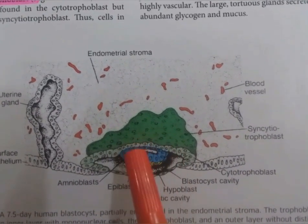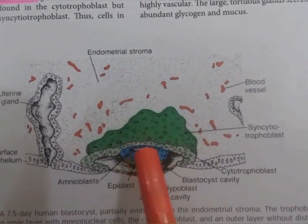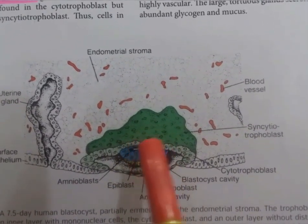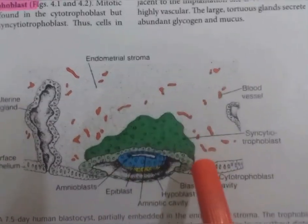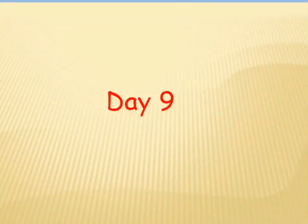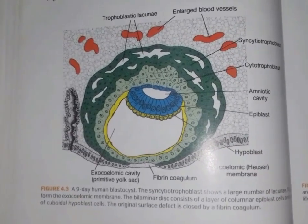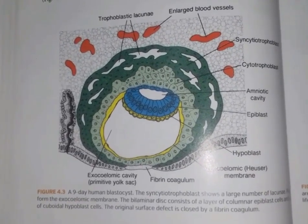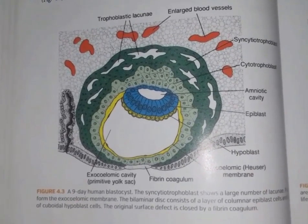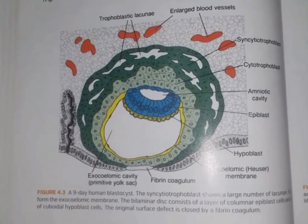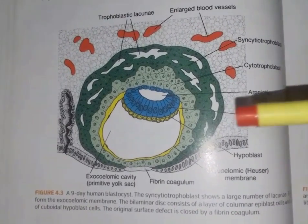The space between the cytotrophoblast and the epiblast cells is called the amniotic cavity — the future amniotic cavity.